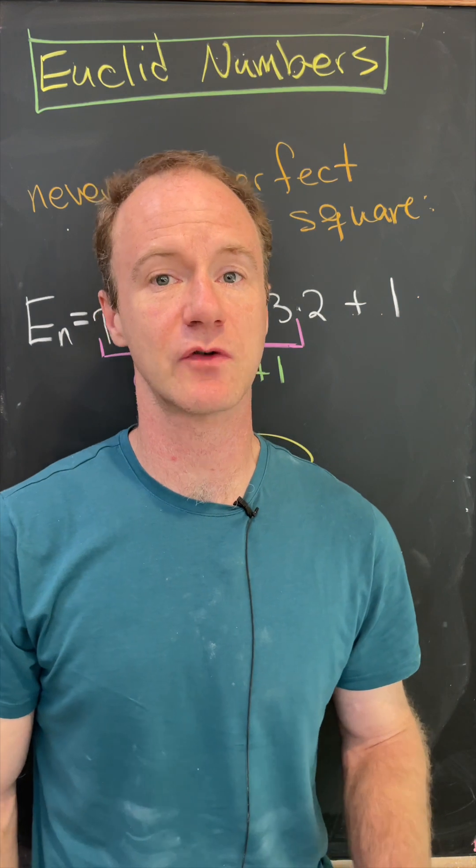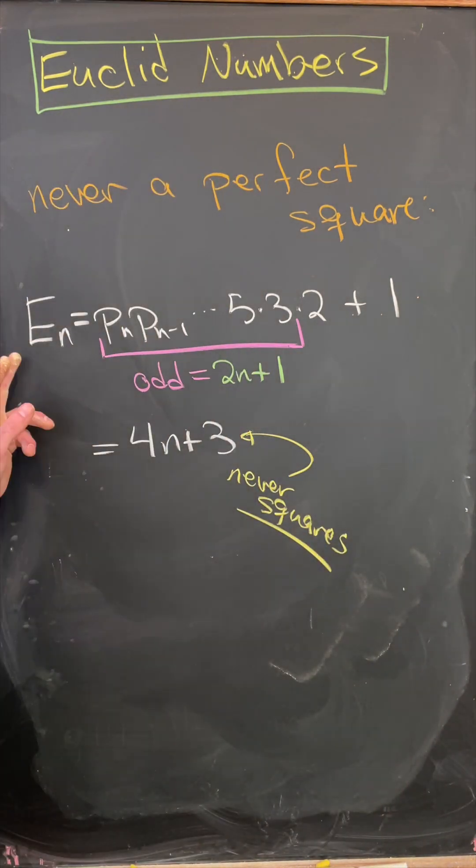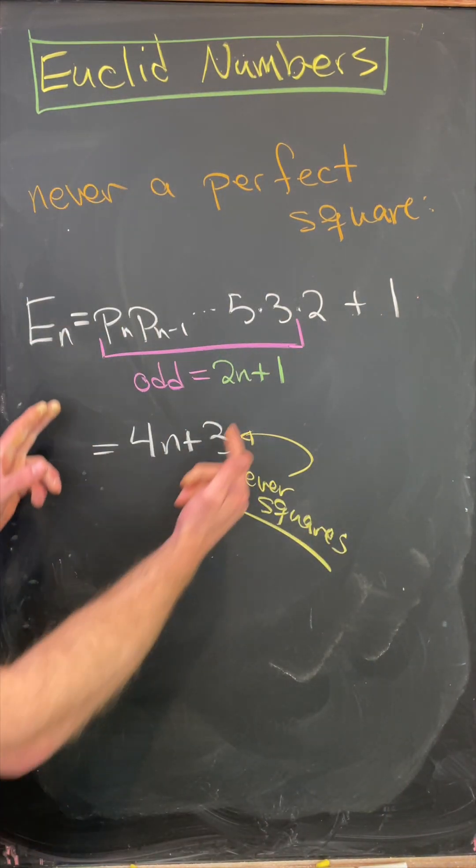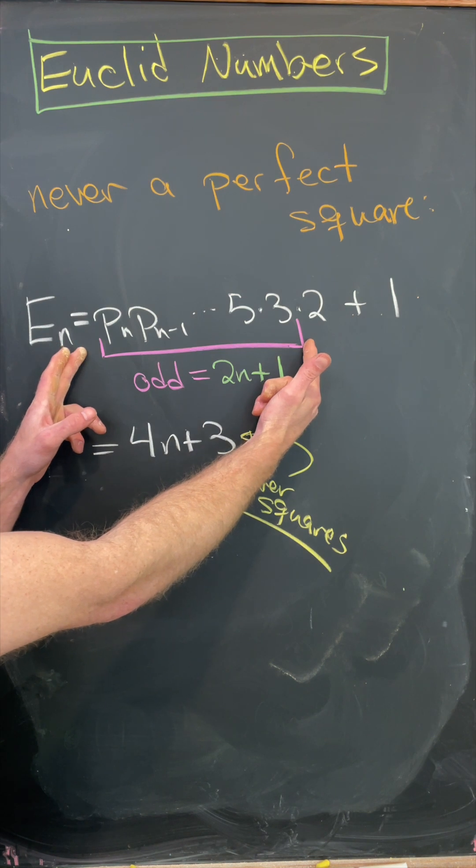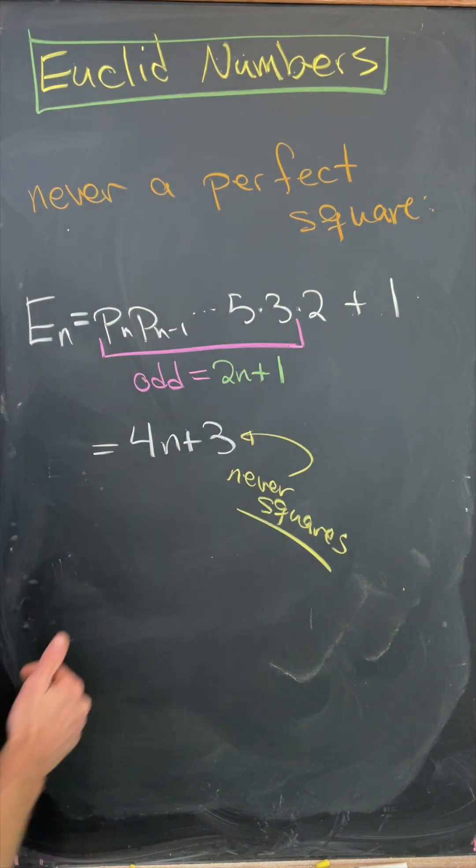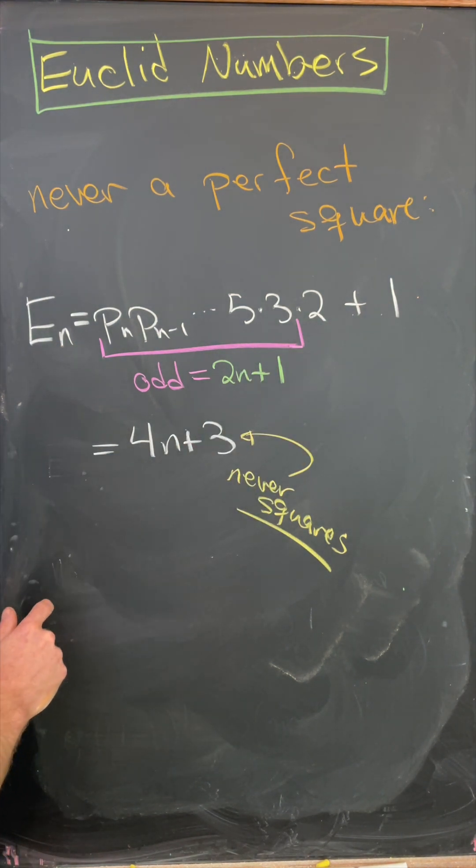It's also fairly easy to show that the Euclid numbers are never squares. Let's look at the nth Euclid number, which can be decomposed into the product of a bunch of odd numbers, which is odd times 2 plus 1, making it of the form 4n plus 3. But numbers of the form 4n plus 3 are never squares. That's fairly easy to check.